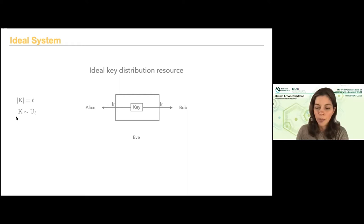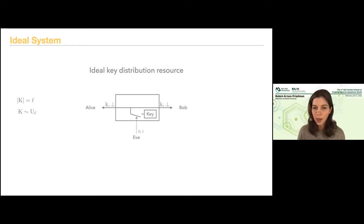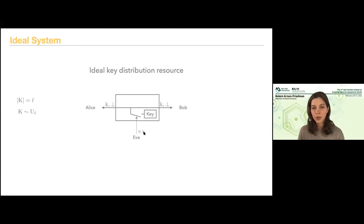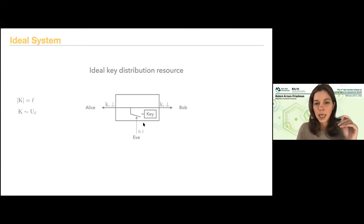It might be too naive, because Eve can always stop the communication between Alice and Bob — we cannot escape this. So we model it in the ideal case as well. I have the thing that produces the key, and Eve can input 0 or 1: 0 means the key is not distributed (Alice and Bob get an abort signal), and if Eve puts 1 she lets the key pass and Alice and Bob get the key. This is an ideal key distribution resource for us.